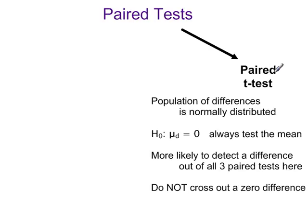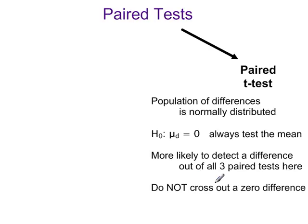The paired T-test requires that the population of differences is normally distributed — this is either known or assumed. We always test the population mean difference. It's more likely to detect a difference if there is one, out of all three of these paired tests. We do not cross out a zero difference; a zero difference is used as part of the test.